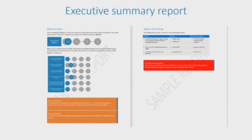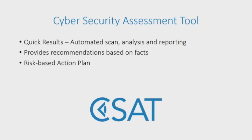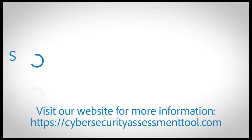The results of the scan are presented in a final report. The fact-based recommendations and the risk-based priority actions help organisations to allocate their limited security budgets to the right projects and also make visible to the business why this is important. Thanks to the automated scan and analysis, the CSAT delivers concrete results within one week, with recommendations based on actual information retrieved from your IT infrastructure and a risk-based action plan with priorities to continuously improve your cybersecurity.